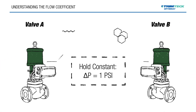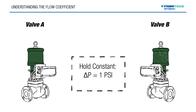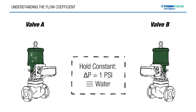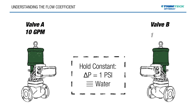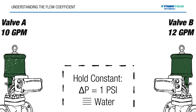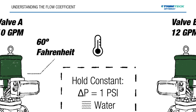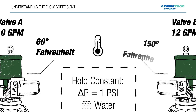So we have Valve A and Valve B again. In this case, we're going to hold water as a constant — making sure that both valves are flowing water at 1 psi differential pressure. We take another measurement and find 10 gallons per minute in Valve A, but Valve B is now at 12 gallons per minute — still different. There must be another variable to consider. We find that the temperature of the water flowing through Valve A is at 60 degrees Fahrenheit and through Valve B is at 150 degrees Fahrenheit.